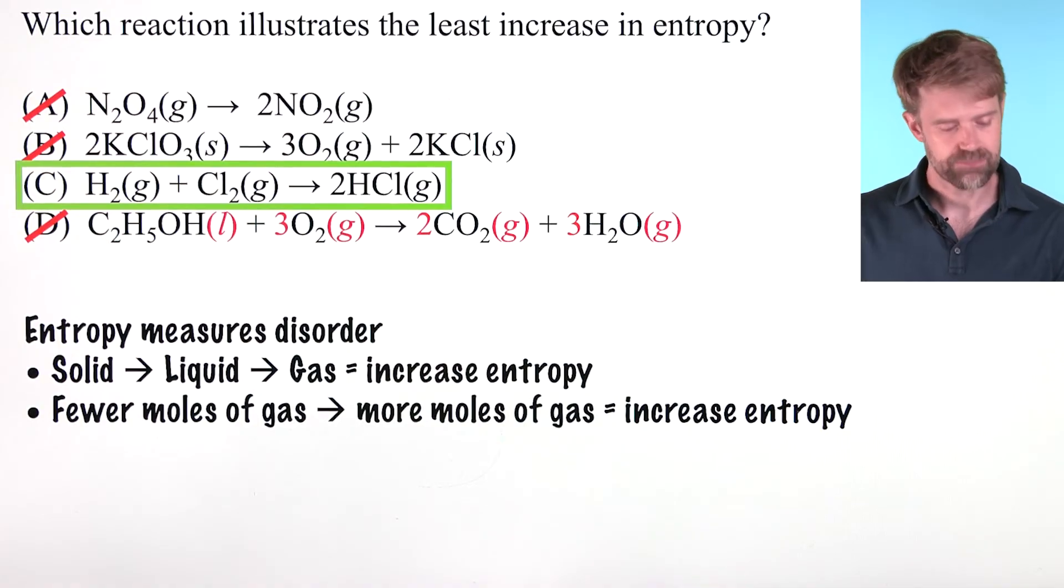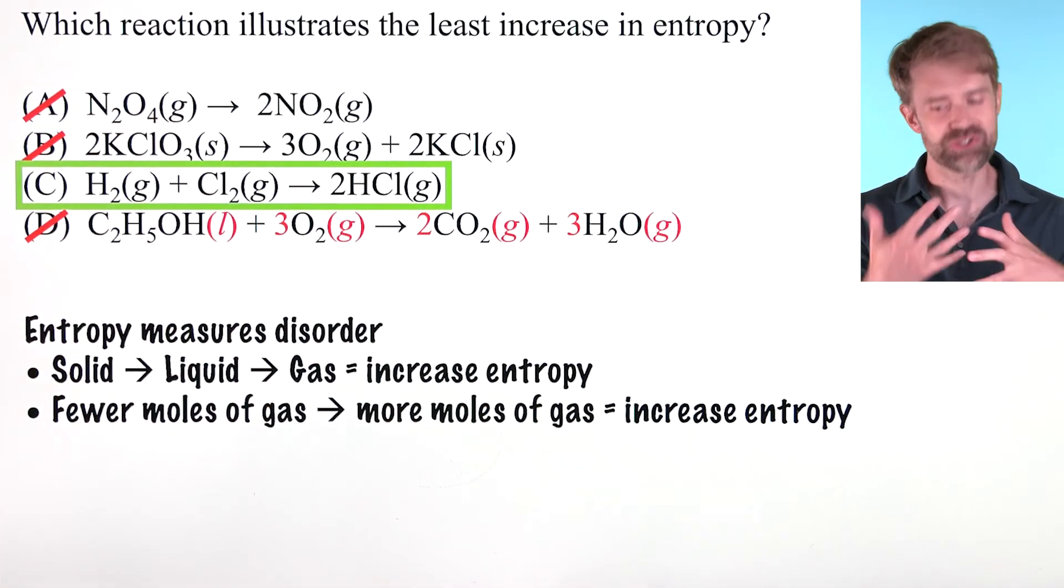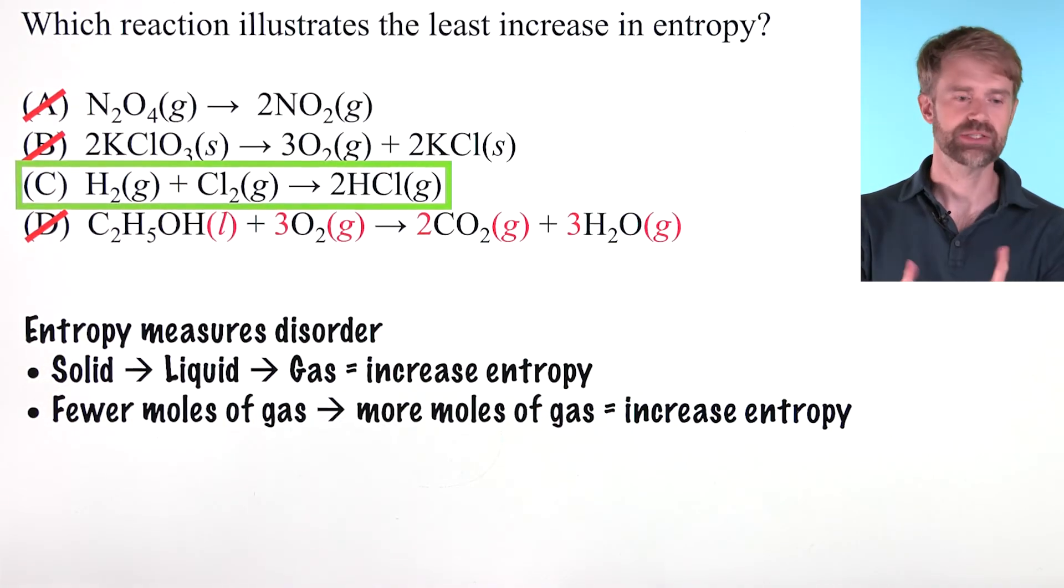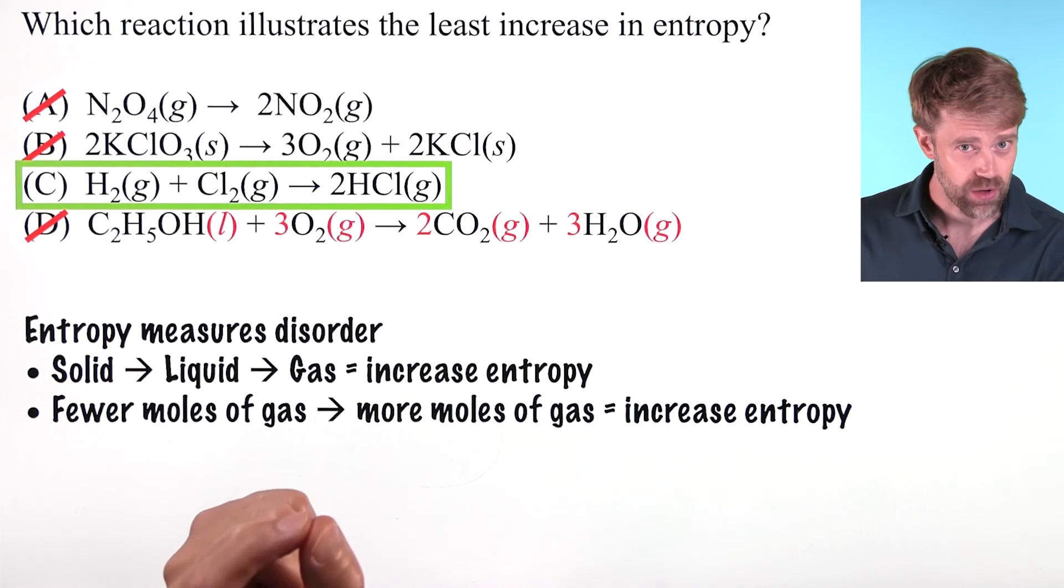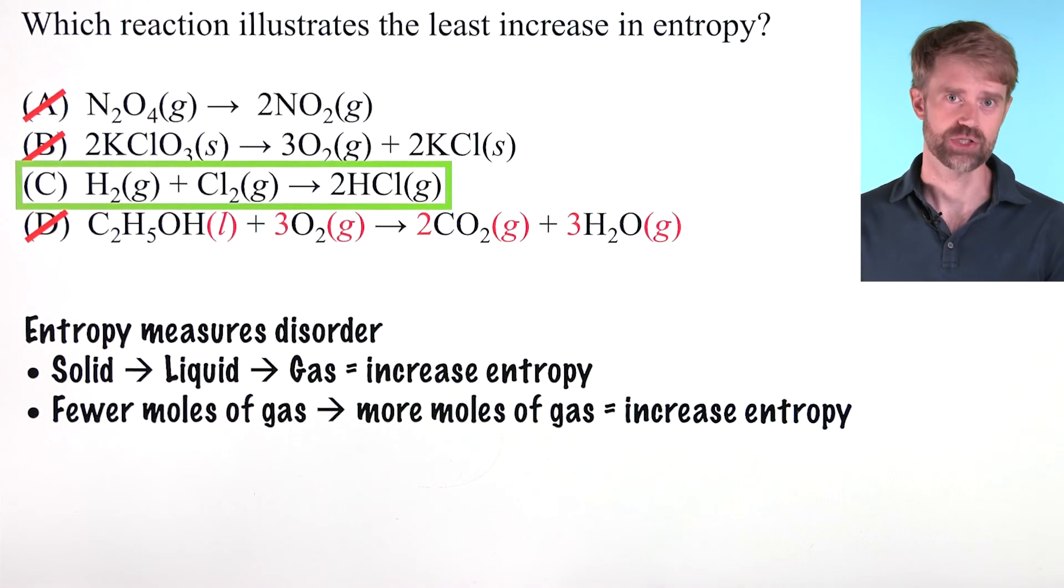Sometimes you'll be in a situation where all the other options are definitely wrong. And in this case, the answer choice that was least bad, the one you're unsure about, sometimes that's going to turn out to be the correct answer. So that's a really important strategy to keep in mind. Don't cross anything off unless you're sure that it's wrong.